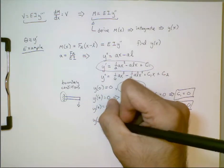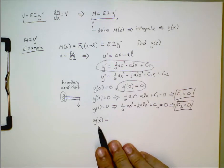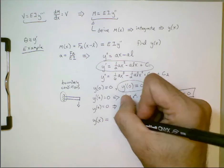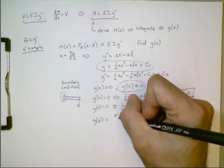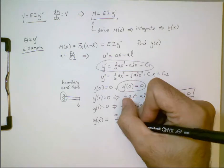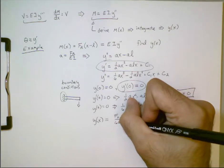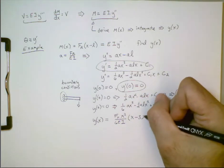So, then we can conclude the solution, or the radial deflection as a function of x, is equal to this. If I substitute a back in, we have the radial force times x squared divided by six times ei times the quantity x minus three times l.